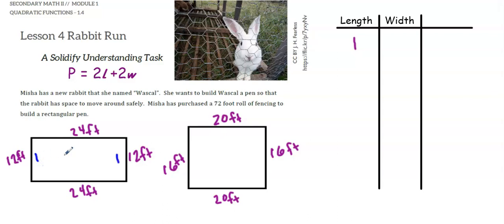For my rectangle, if the length was equal to 1, 1 plus 1 is 2. When I take 72 and subtract out those 2, I have 70 feet of fencing divided into 2 equal groups. That would be a 35 foot fence here, 35 feet of fencing there. So the width would have to be 35.